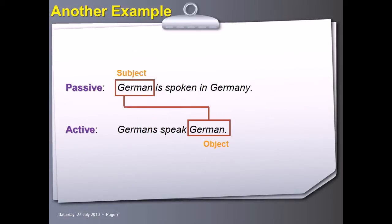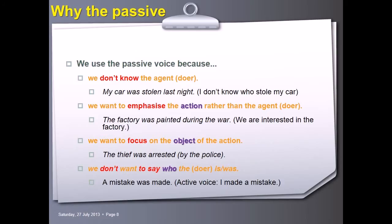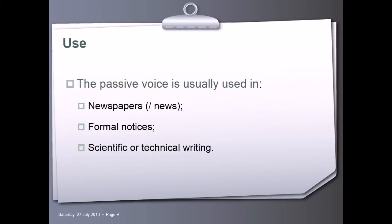Remember that the subject in the passive is actually the object in the active. In English we use the passive only when it is necessary and in certain situations. The following explains to you why we use the passive — in what situations, oral or written, do we often use the passive voice? Which sentences are easier to change?